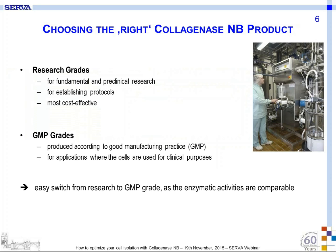Our research-grade collagenases are intended for fundamental and pre-clinical research and for protocol establishing, as they are the most cost effective. However, we highly recommend switching to GMP-grade collagenases — produced according to Good Manufacturing Practice by the German pharmaceutical company Nordmark — for applications where the cells are used for clinical purposes like transplantation. Since the enzymatic activities of many of our research collagenases are comparable to the GMP-grade ones, switching between these collagenases is easy if you dose according to activity.